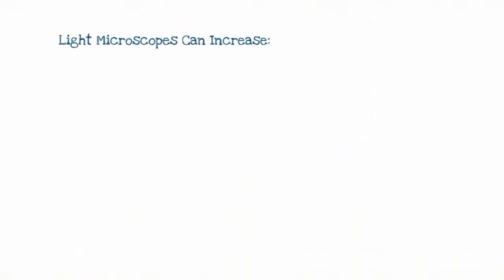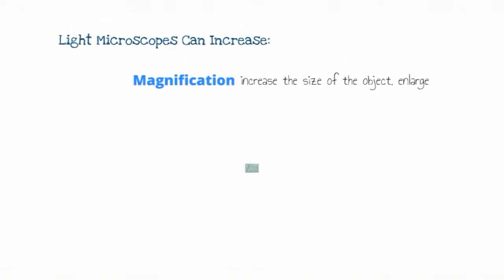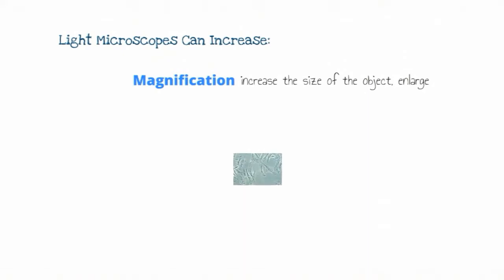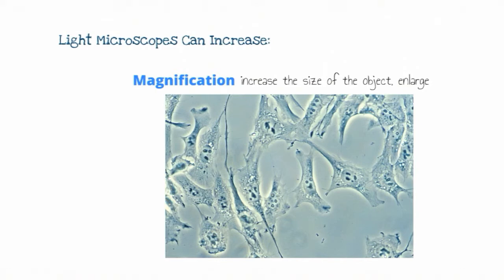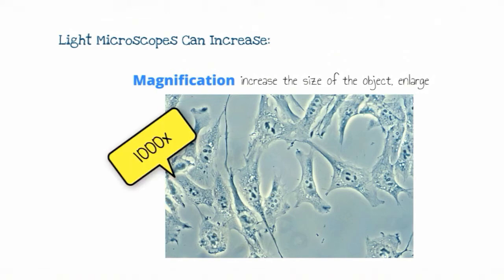The other characteristic that light microscopes provide is magnification. You've probably heard this word — it is the way that you increase the size of an object, or enlarge it. Cells are about 1 to 100 micrometers in size, and what microscopes allow us to do is to visualize these small organisms at a larger size. Light microscopes are able to increase the size of a cell by around a thousand times, which really allows us to study them in the right detail.